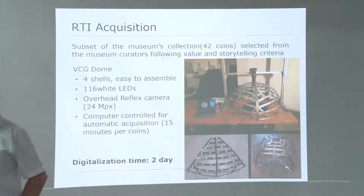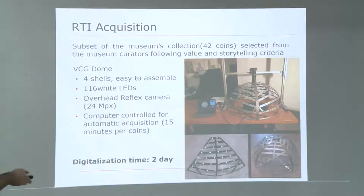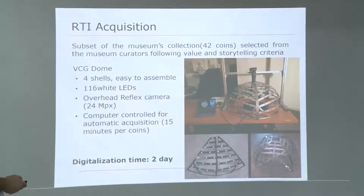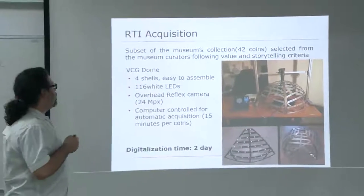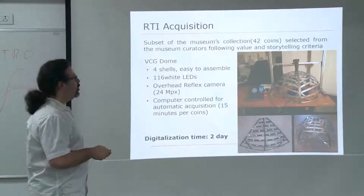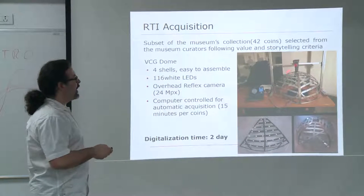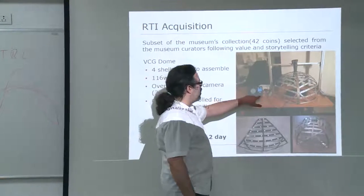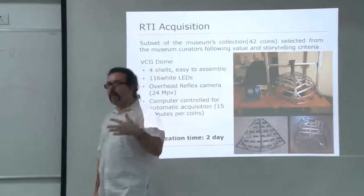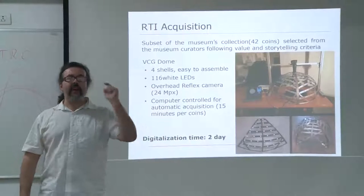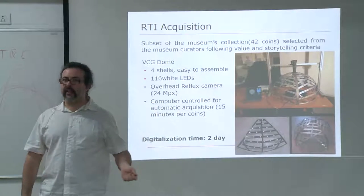This was one of the costlier things in the project — everything else was around 1000 euros, but the lens alone was 700 euros. But we are reusing it, so it's not a single-use lens. We used the dome I described before — 116 white LEDs — and the computer controls all the lights and the camera. The software makes the dome switch to the next light, then shoot the photo and transfer the data.